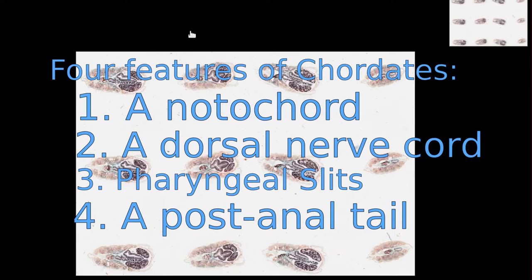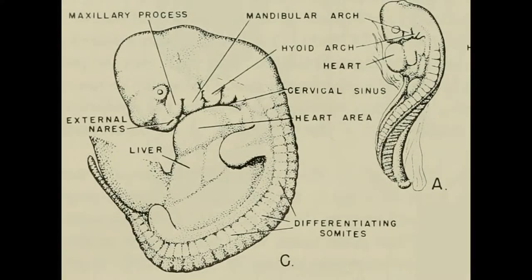And just like the lancelet, you would have had these same features but during your embryonic development. Rather than retaining these features into adulthood, your notochord became your intervertebral discs, while your dorsal nerve cord became your spinal cord. The pharyngeal slits formed your face, jaw and ears, and your post-anal tail shrunk down to form your coccyx.